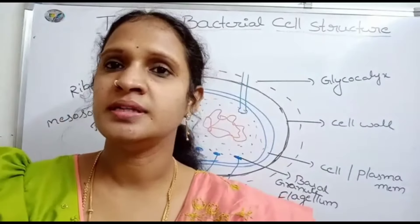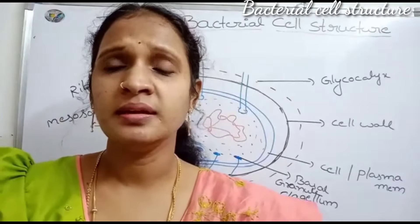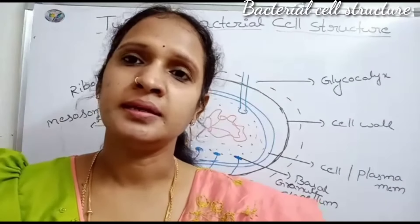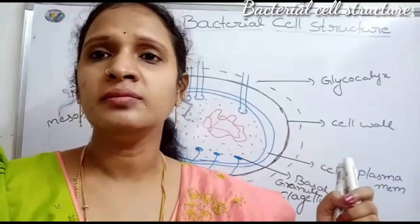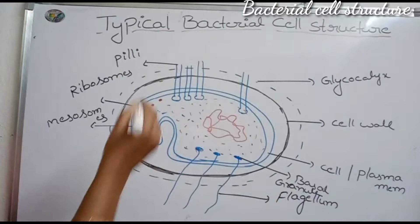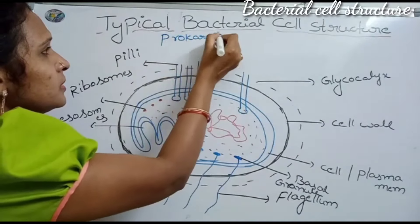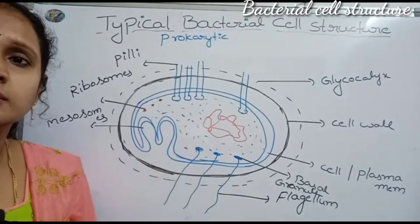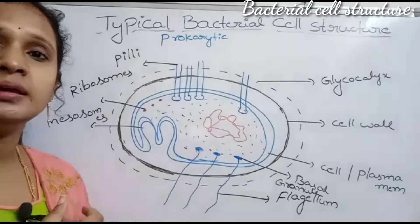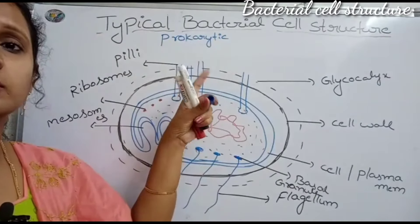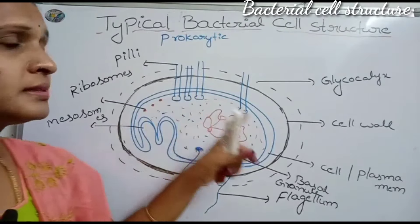Hi, good morning. In this video we discuss about the bacterial cell structure. In previous classes we discussed bacterial types and bacterial introduction. In this video we are talking about bacterial structure, their parts and their functions. Bacteria is a prokaryotic organism, meaning there is no membrane around the nucleus, so the naked DNA is visible. There is no membrane bound around the nucleus — this is called a prokaryotic organism.